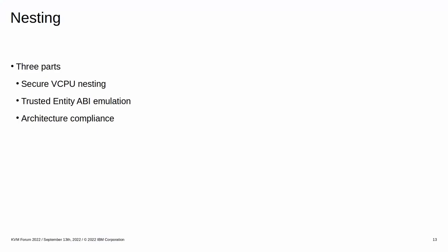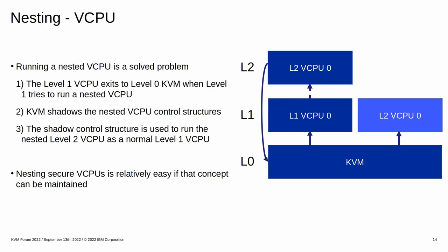There are three things needed to nest secure VMs. We need the ability to run secure vCPUs as nested vCPUs, and we need to let the level 1 hypervisor manage secure VMs the same way a level 0 hypervisor would, which means providing the trusted entity API to the level 1 operating system via emulation. We also need to take care of side effects to achieve architecture compliance. Running a nested vCPU is a solved problem: the level 1 vCPU exits to level 0 KVM where level 1 tries to run a nested vCPU, KVM shadows the nested vCPU control structures, and the shadow control structure is used to run the nested level 2 vCPU as a normal level 1 vCPU.